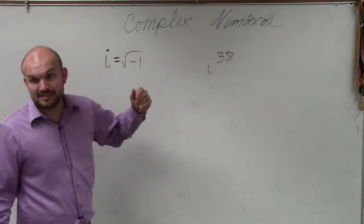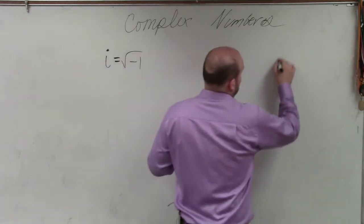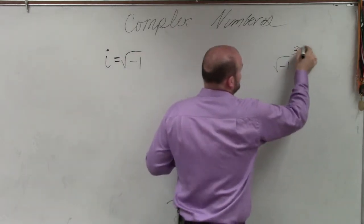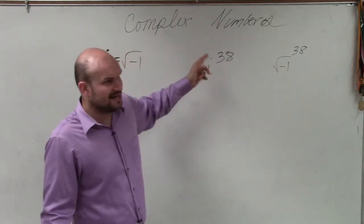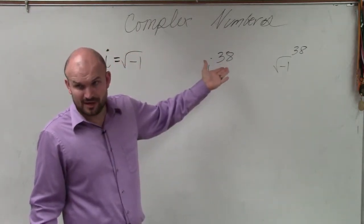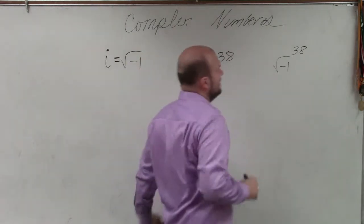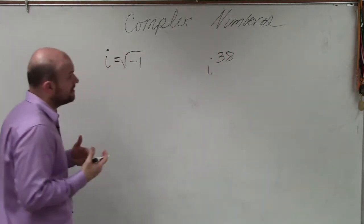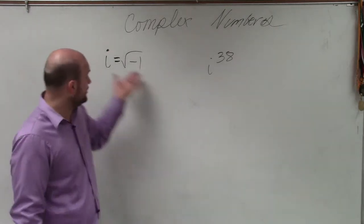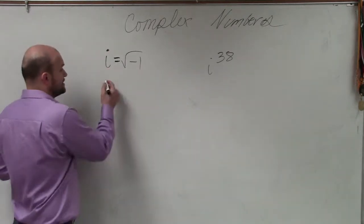For instance, this is i to the 38th, or you could also say the square root of negative 1 to the 38th power. But the majority of you guys look at this and say, that looks pretty crazy. This kind of just looks like a variable raised to the 38th power, right? It just looks a little bit better than that. However, it's really the same thing. Now, so if we're going to get to i to the 38th, then we only know i, then we need to start working here.